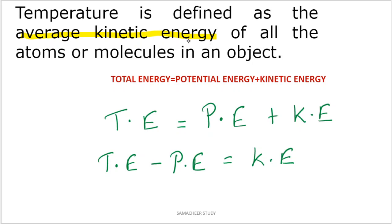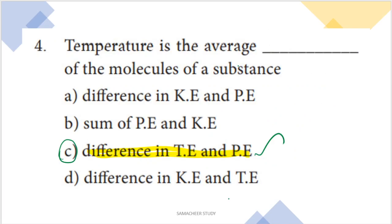It is kinetic energy. The total energy minus potential energy gives kinetic energy: KE = TE − PE. Where TE represents total energy, PE is potential energy, and K is kinetic energy. So the answer is: temperature is the average kinetic energy of the molecules of the substance. Option C is the right answer.